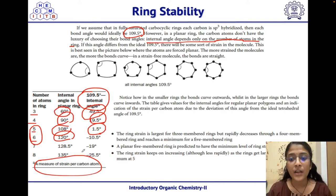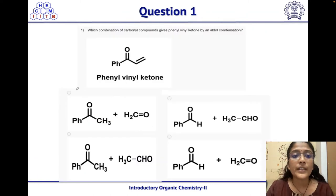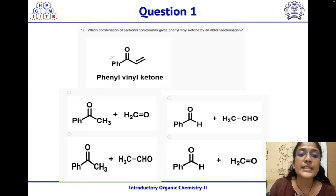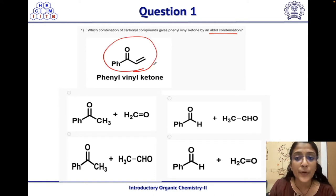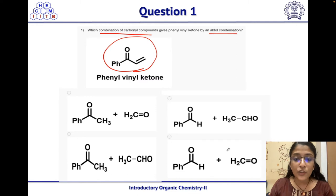Now we will move to question 1 of this assignment. Which combination of carbonyl compounds gives phenylvinyl ketone by an aldol condensation reaction? They have given the structure of phenylvinyl ketone as the product and are asking for the starting materials needed. Four different sets of carbonyl compounds are given and we need to identify the correct combination.